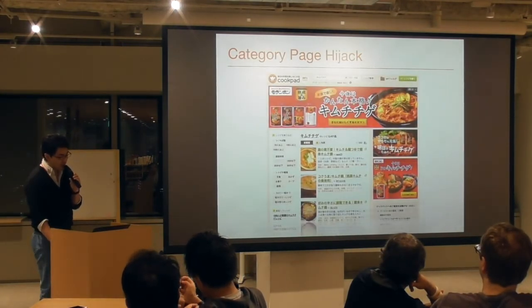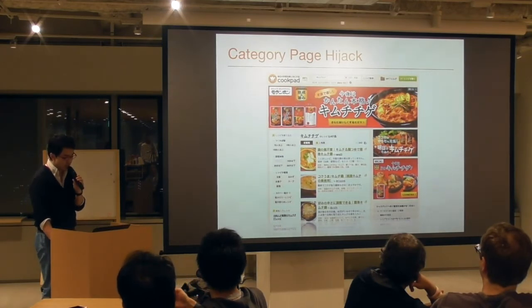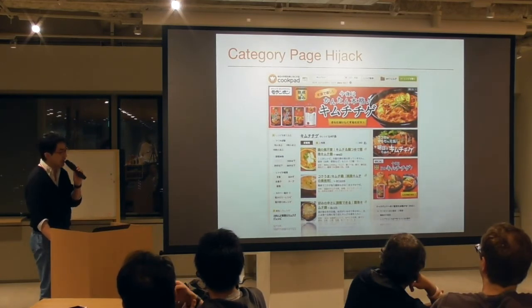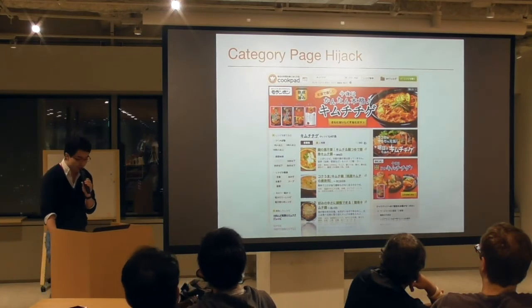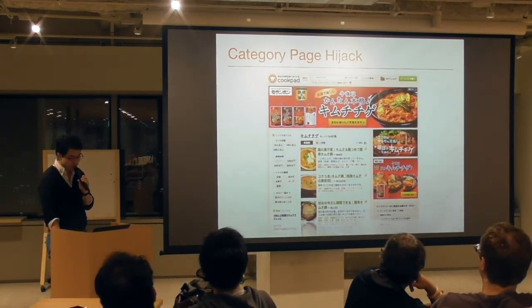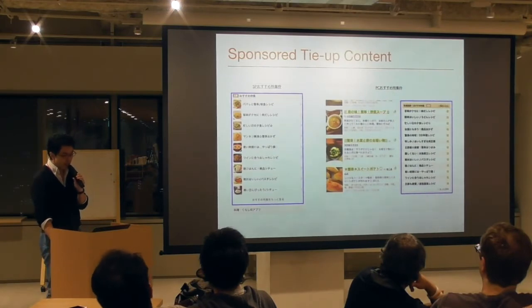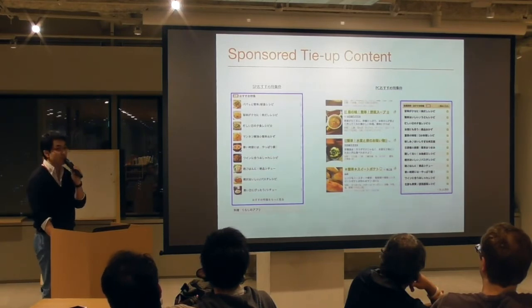I am showing you some of our famous ad products. This is one of the main ad formats called Category Page Hijack — this hijacks the whole page when you're searching. Here are sponsored tie-up contents. The format is simple. Once you click on them, you go to the client's landing page about their new product.